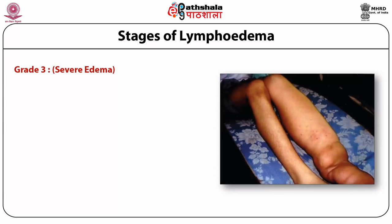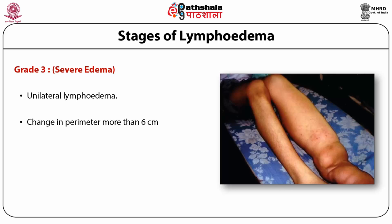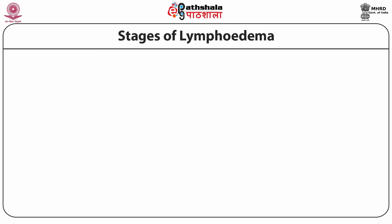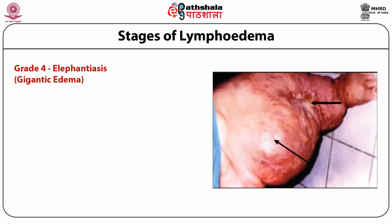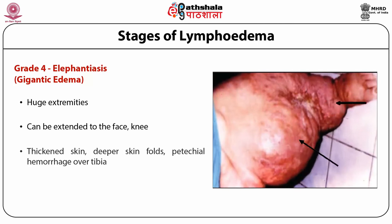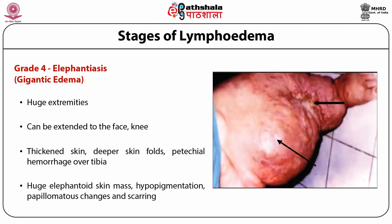Grade 3, also called severe edema, shows unilateral lymphoedema. The difference in perimeter is now more than 6 cm. This stage is characterized by significant alterations in the skin such as cornification, keratinization, formation of cysts and fistulae. The skin starts to thicken and possesses increased skin folds. Grade 4, called gigantic edema, also known as elephantiasis, is the most severe stage. It has huge extremities due to almost complete blockage of the lymph channels, and can extend to the face, knee, etc. The individual manifests thickened skin, deeper skin folds, and periosteal hemorrhage over tibia. The affected area may show huge elephantoid skin mass, multiple areas with hypopigmentation, papillomatous changes, and scarring.